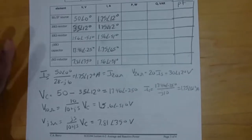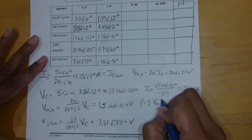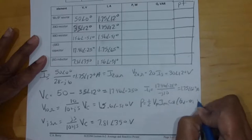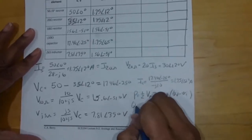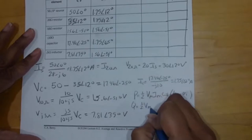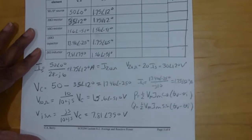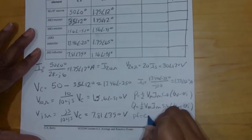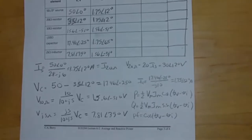To get the power: average power is one-half Vm·Im·cosine(θV minus θI). Reactive power is one-half Vm·Im·sine(θV minus θI). The power factor is cosine(θV minus θI).